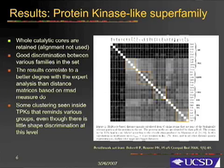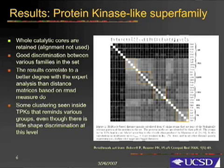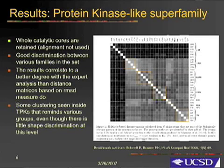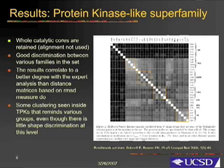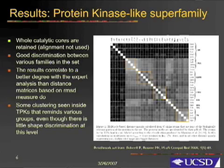The upper left band in the matrix shown in the slide represents distances between representatives of atypical kinases, and the dark color denotes that they are relatively far in the configuration space. By contrast, the lower left 25 by 25 block matrix represents distances between proteins in the same typical kinase family, and therefore they are properly represented by light colors. The result correlates well with the expert analysis, while distance matrices based on RMSD measures do not correlate as well.